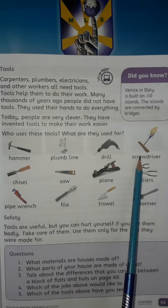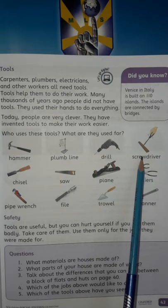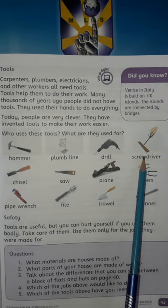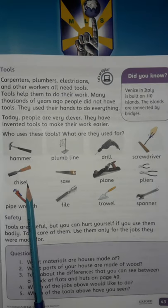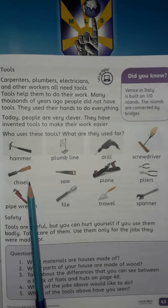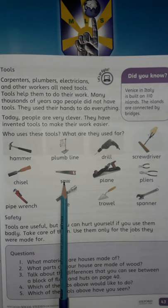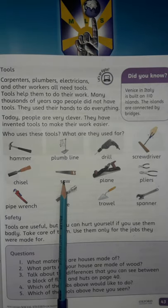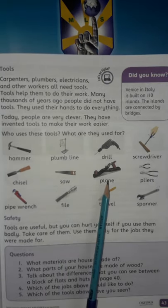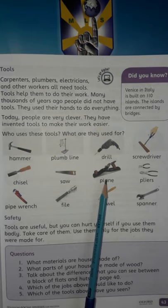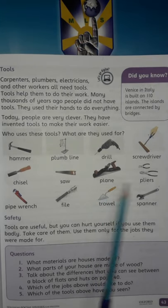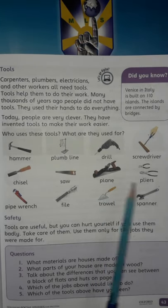Screwdriver: used to put screws in walls or any other surface. Chisel: chisels are used for carving or cutting hard material like wood. Saw: a saw is used to cut material. Plane: a plane is a wood-shaping tool that flattens the wood.